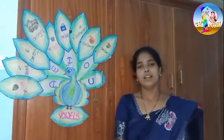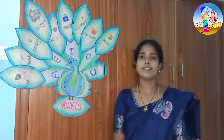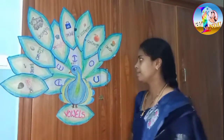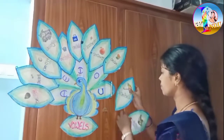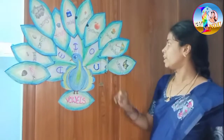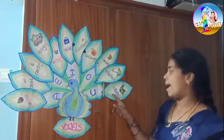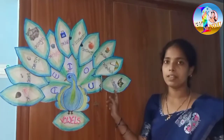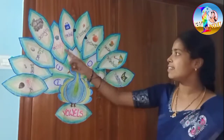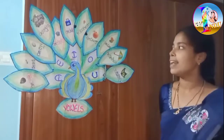Now let us see the examples of the vowel sound U. We have an umbrella. In the word 'butterfly', the sound of U is present. Peacock says the magic words — they are vowels!